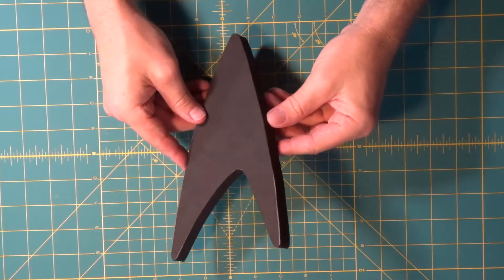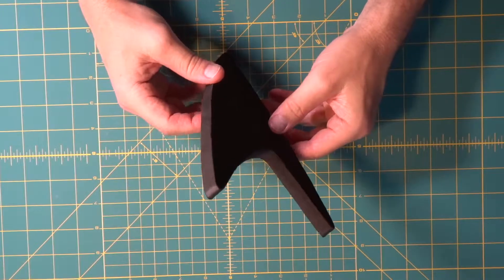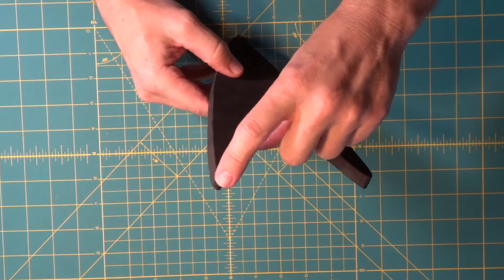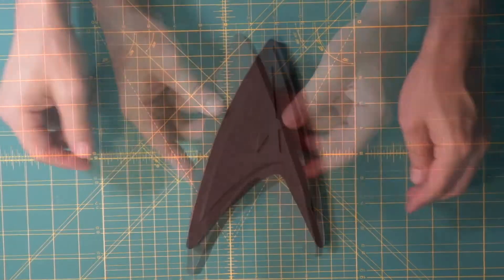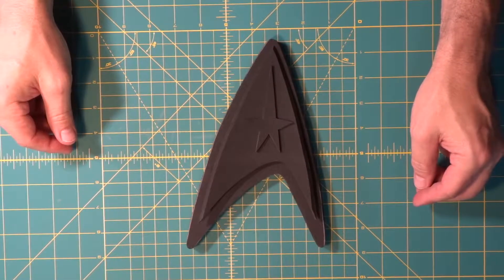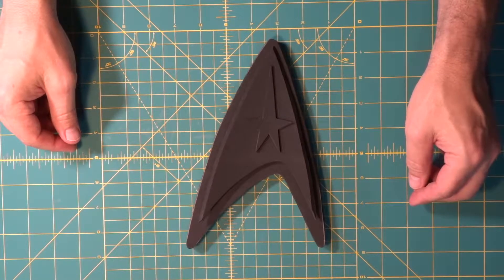All right, there we go. Check that out. That's why a bandsaw is so jammin'. Even if you can't get the super tight corners, you can hit it a couple different times going around it. Look at that. That is going to jam as a stand for our phaser.